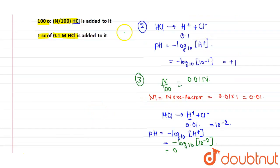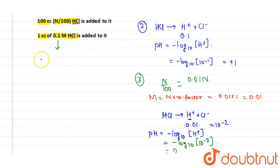The last option is 1 cc of 0.1 molarity HCl is added to it. Again, HCl will dissociate into H positive and Cl minus. If the concentration is 0.1, then the pH will be minus log 10 of 10 to the power minus 1. This value is 1, but the concentration has also changed, so this option is incorrect.